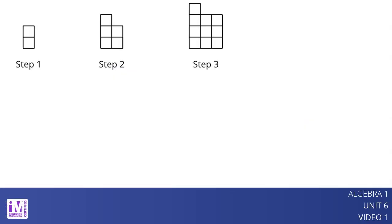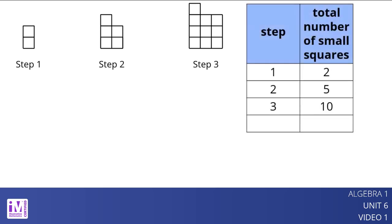Here is a pattern of shapes where the step number and the number of small squares change in a particular way, but the change is neither linear nor exponential. The table shows the relationship between the step number and the number of small squares. The number of small squares increases by 3 and then by 5, so we know that the growth is not linear.